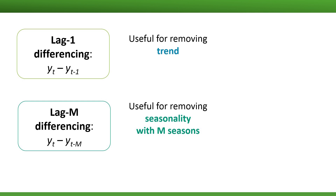Another useful type of differencing is of lag m, where m is the number of seasons in our data. Lag m differencing means subtracting the value from the same season in the previous cycle. This is useful for removing seasonality — the difference series will no longer display seasonality.